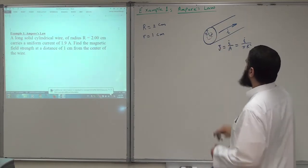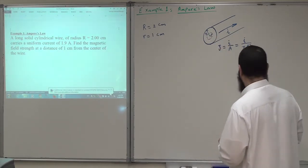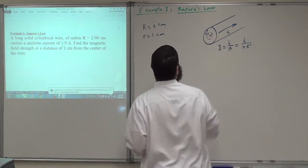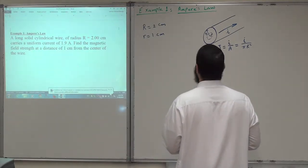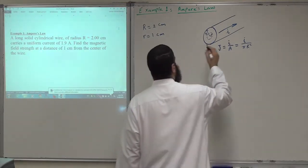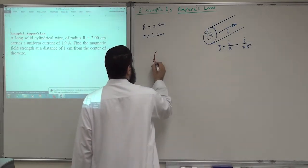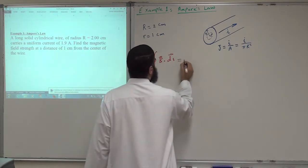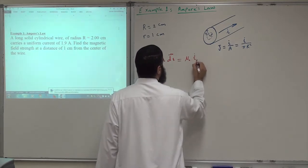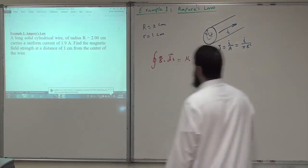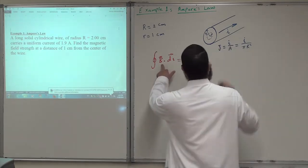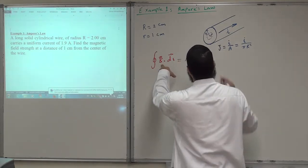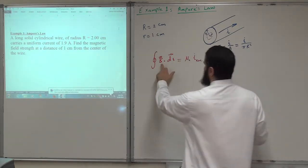We would like to apply Ampere's law to find how much is the magnetic field at 1 cm from the center of the cylindrical wire. Ampere's law says the closed integral of B dot dS, this is the Amperian loop, equals μ₀ multiplied by I enclosed. The magnetic field at this Amperian loop is uniform because of the symmetry of the problem, so we can take it out of the integral.